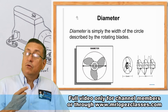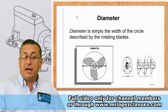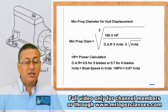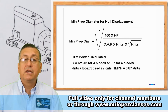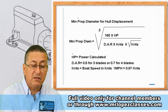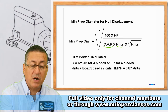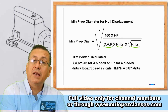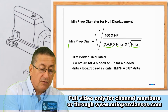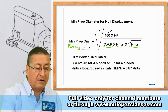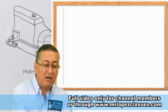Now we are going to calculate the diameter of the propeller for each particular case and work through an example. This is the typical formula used to calculate the diameter of the propeller: it equals the square root of 160 times the horsepower, divided by the DAR times the speed of the boat in knots, times the square root of the speed of the boat in knots. This is the minimum propeller diameter for planning hulls. Now we are going to analyze what the DAR means.